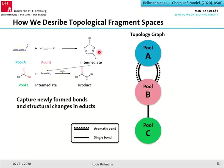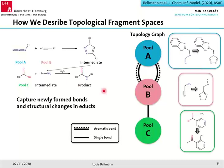To capture newly formed bonds, we define a topology graph with a node for each pool used in the reaction scheme — here pools A, B, and C — and we add bonds between these pools that resemble the newly formed bonds. Between pools A and B we have the two aromatic bonds formed within the triazole, and a single bond runs between pools B and C for the amide bond. In addition, we change the representation of the fragments.